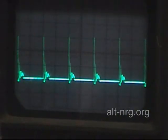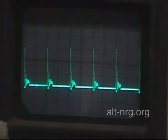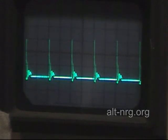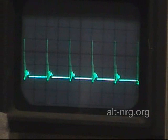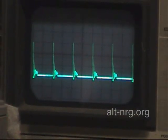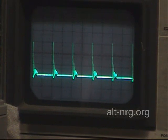Right now, the scope is sweeping at 0.1 milliseconds per division, or one millisecond for an entire sweep. So if there was one pulse for an entire sweep, one at the beginning and one at the very end, that would be 1,000 cycles per second. Because there are five pulses, that is 5,000 cycles per second, the frequency that I have this pulse width modulator set to right now.